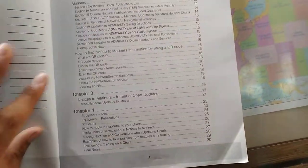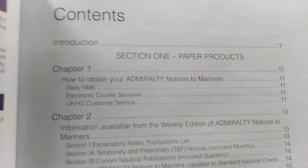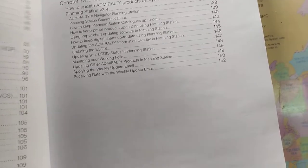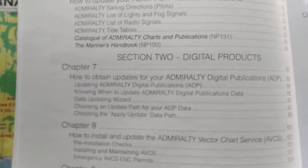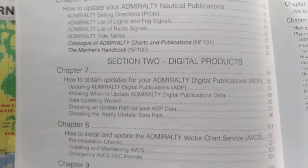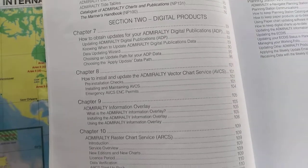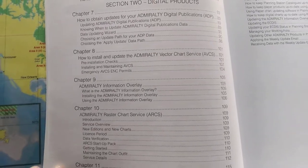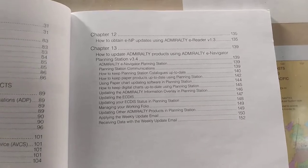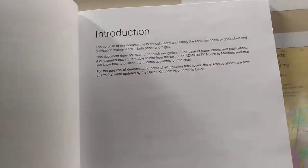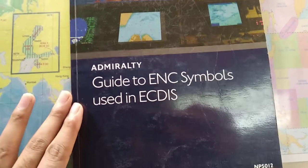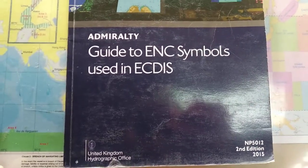As you can see, Section 1 covers paper products and Section 2 covers digital products. How to install and update Admiralty charts — everything is given. You should go through it one time, as this is important.